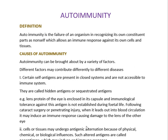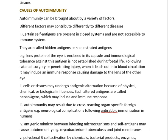it may induce an immune response causing damage to the lens of the other eye. Another example is spermatozoa — certain self-antigens that develop only at puberty, so tolerance is not established during fetal life. When sperm leaks into the blood circulation, it initiates an immune response that leads to sterility. These are best examples where self-antigens enclosed in certain systems act as hidden or sequestered antigens responsible for causing autoimmunity.